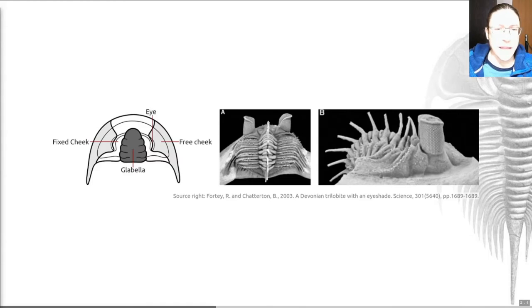In those trilobites that lack eyes it's generally thought that this is a secondary condition and that there is a trend towards reduction in eye size and then eventual loss in multiple groups. However, as you can see from the right hand side here, there are also taxa where the eyes become really prominent. This particular species has 360 degree vision because they're mounted on a turret that allows them to see in all directions and they have a lip at the top that provides an eye shade to stop the sun getting in their eyes. Eyes are highly variable.